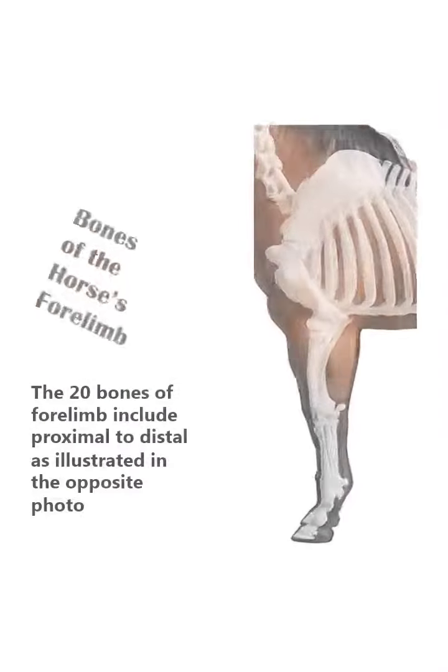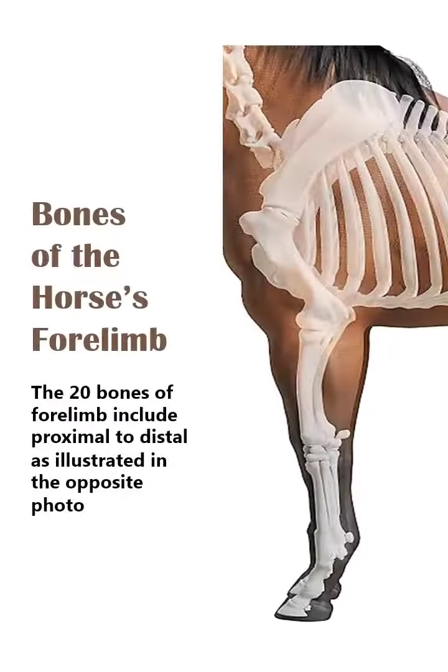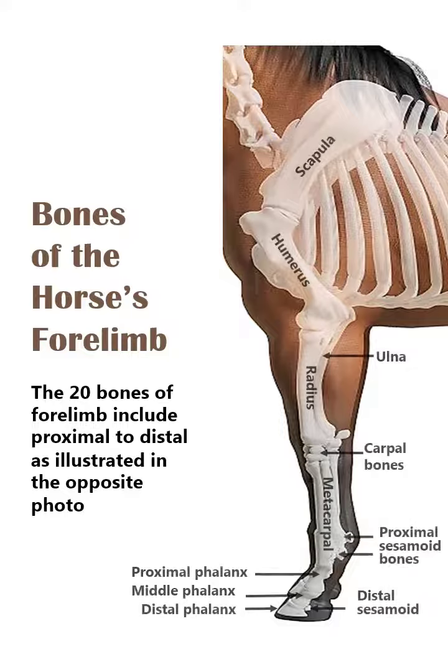The bones of the forelimb include, proximal to distal: scapula, humerus, radius, ulna, carpal bones, metacarpal bones, proximal phalanx, proximal sesamoid, middle phalanx, distal phalanx, and distal sesamoid.